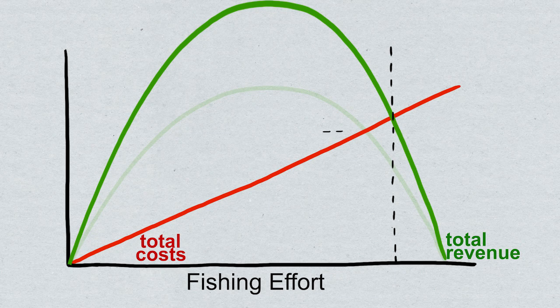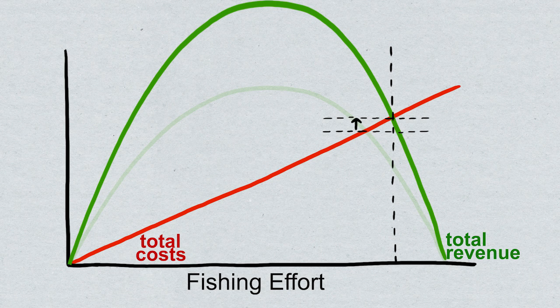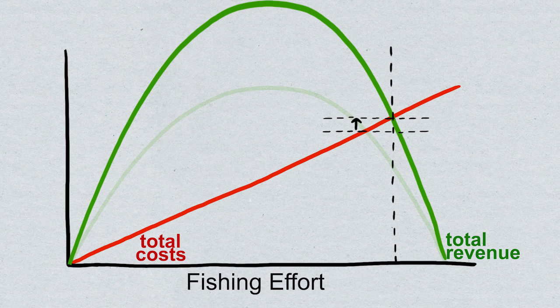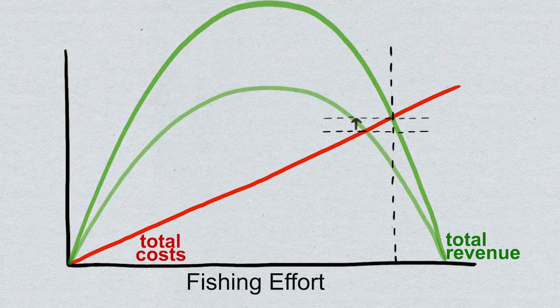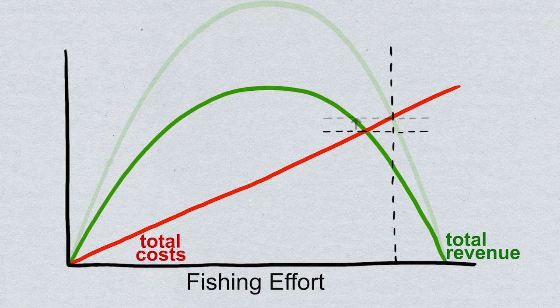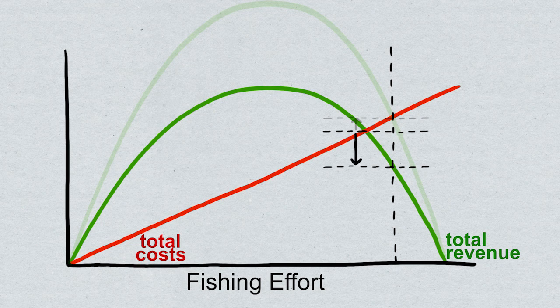Now it seems like total revenue has gone up, but this is just from the subsidy. This revenue curve is a mix of revenue from fishing and from subsidies. If we look at the old revenue curve, that's just revenue from the fishing, the extra effort has actually decreased the revenue from the fishing.